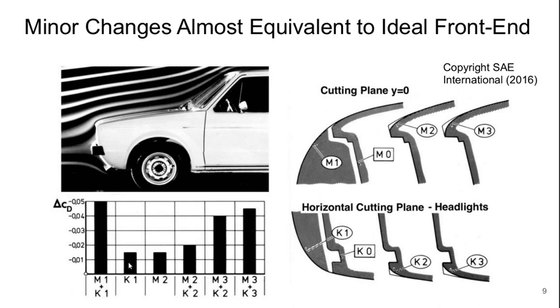If I have just one or the other, I get much less than half of the effect. So when you add K1 plus M1, you get much more than the sum of the parts.